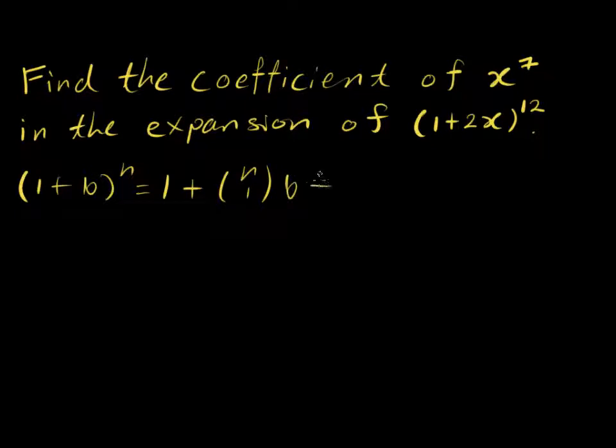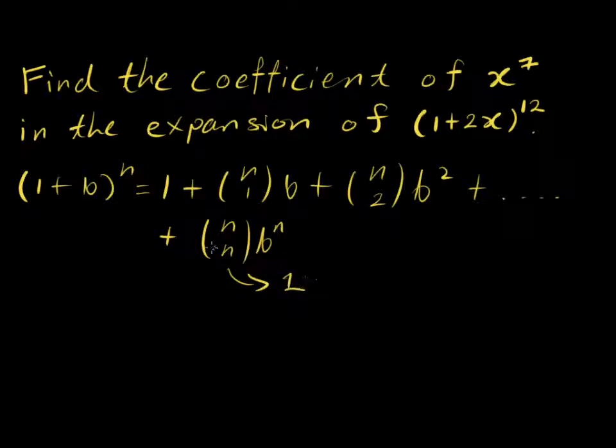Multiplied by b plus n choose 2 times b squared, plus all the way up to n choose n term where b is of the order of n. And in this case here, we know that n choose n is actually 1. So this term is nothing more than plus b to the power of n.